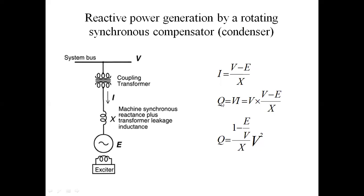Next, reactive power Q is equal to V × I, where V is the system voltage and I = (V − E) / X. Substituting, the final formula is: Q = (1 − E/V) × V² / X. When reactance X decreases, the reactive power increases. When reactance X increases, the reactive power decreases. These two are inversely proportional.